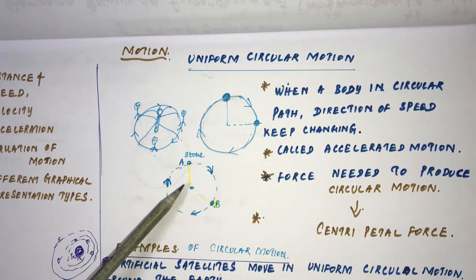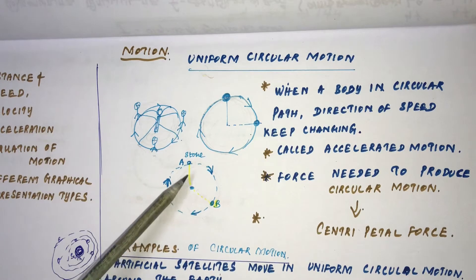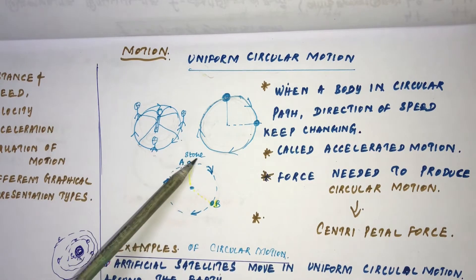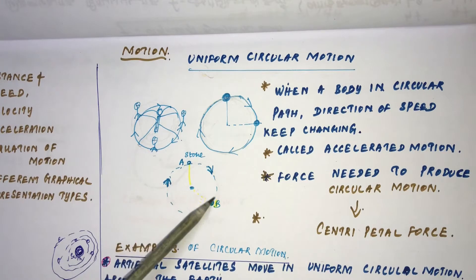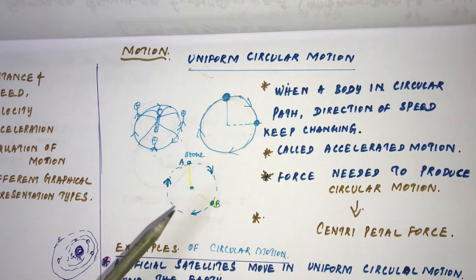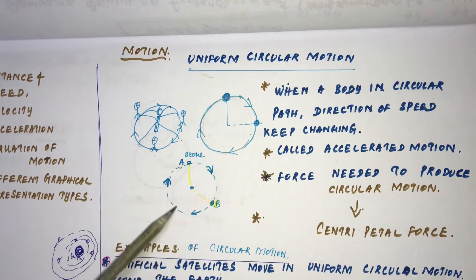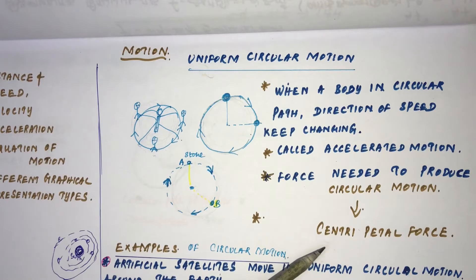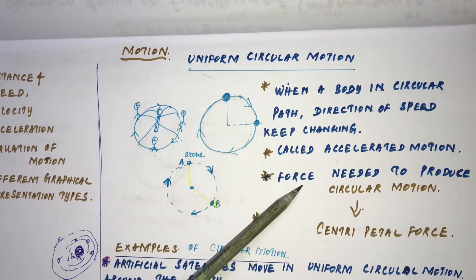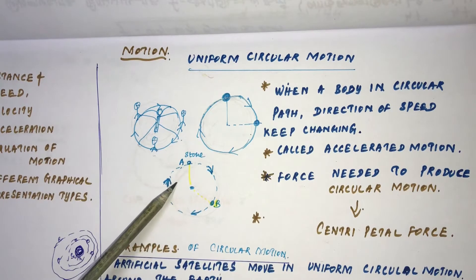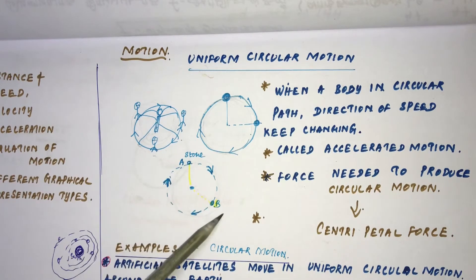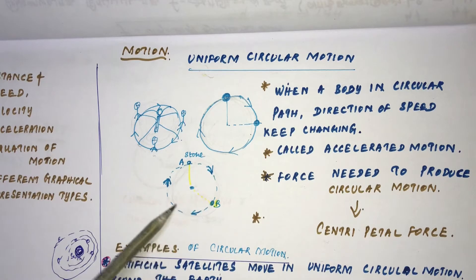For example, imagine a stone tied by means of a thread. With a force, it starts rotating in a circular path. So there are forces needed for an object to make a uniform movement in a circular path. That force is called centripetal force.